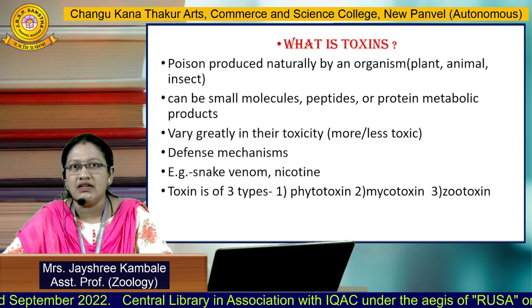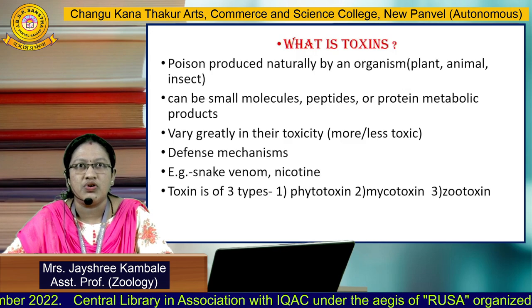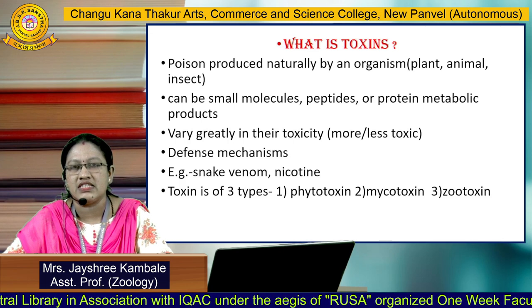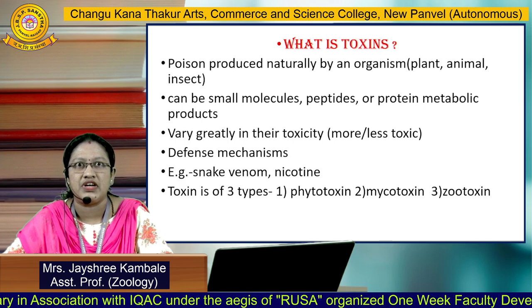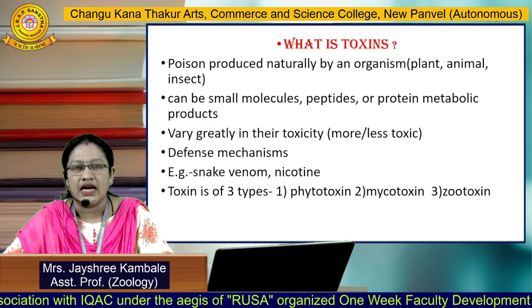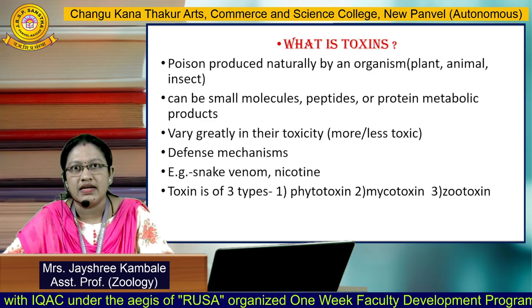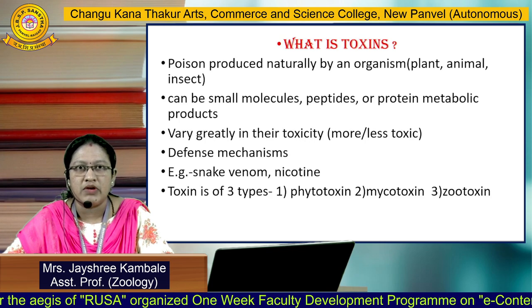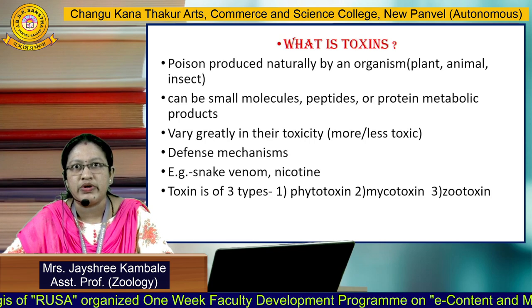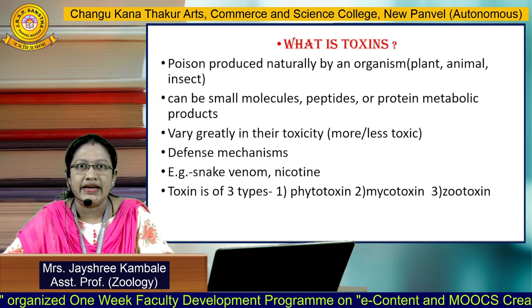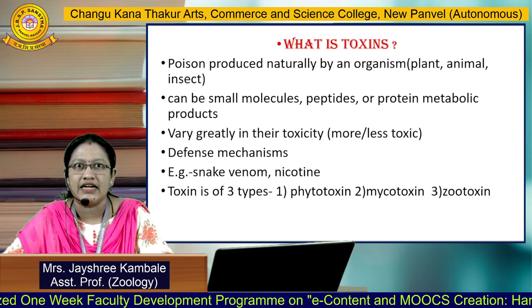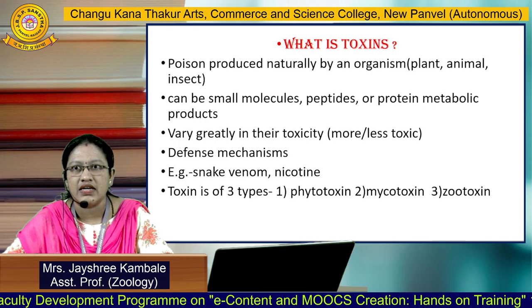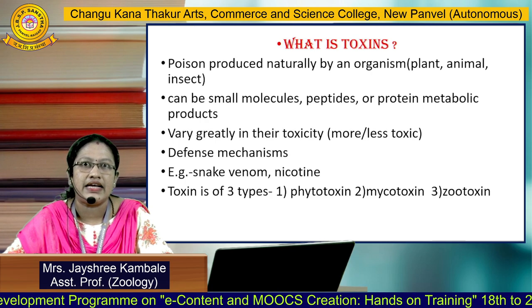Before starting the Zootoxin, we should know what is meant by toxin. Toxins are the substances or poison produced naturally by an organism, either from plant, animal or insect. It can be a small molecule, peptide or protein metabolic products. It can vary greatly in their toxicity — some toxins are more toxic and some are less toxic.